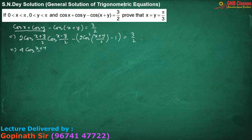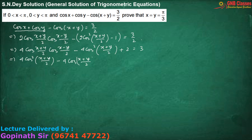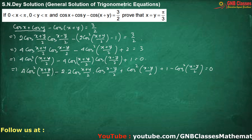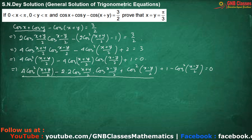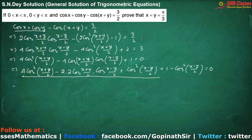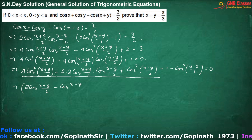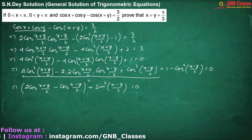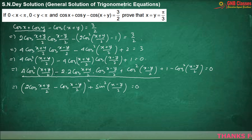Now let me multiply both sides by 2, and taking everything to the right-hand side. Applying the formula a² - 2ab + b², this part gives a perfect square. This simplifies, and we also get sin²((x-y)/2) equals zero. Now the sum of two squares equals zero.